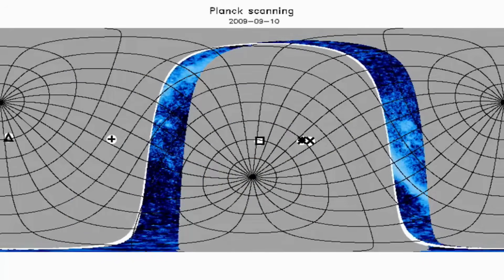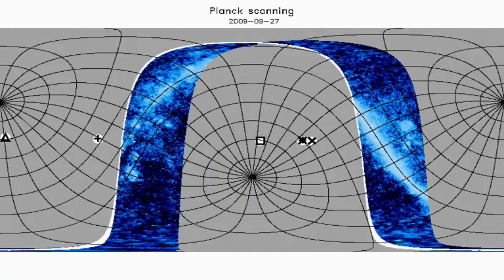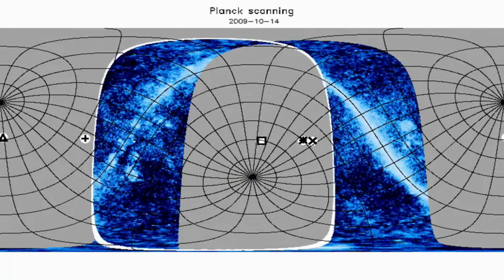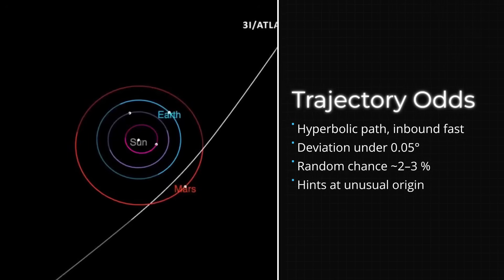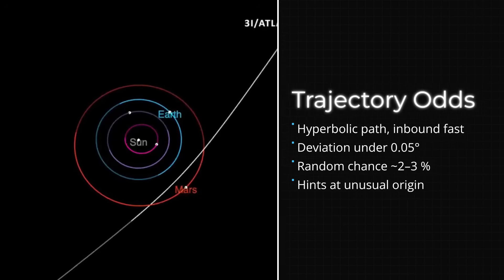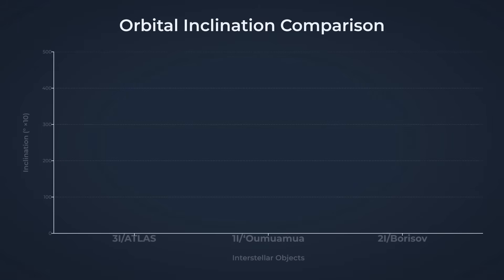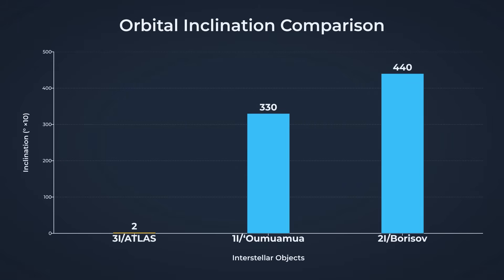Some simulation work suggests that, after accounting for how surveys like Atlas and Pan-STARS focus their searches near the ecliptic, the odds of finding such a well-aligned object rise to a few percent. Still, the rarity stands out.